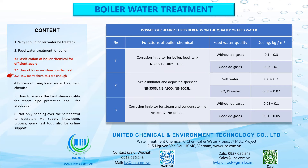2. Function: Scale inhibitor and deposit dispersant — NBS 503, NBA 900, NB300C. Soft water: dosing 0.07 to 0.2 kg/m³. RO or D-mixed bed water: dosing 0.05 to 0.07 kg/m³. 3. Function: Corrosion inhibitor for steam and condensate line — NBM 532, NBN 356. Feed water without degassing: dosing 0.03 to 0.1 kg/m³. Feed water with good degassing: dosing 0.01 to 0.05 kg/m³.